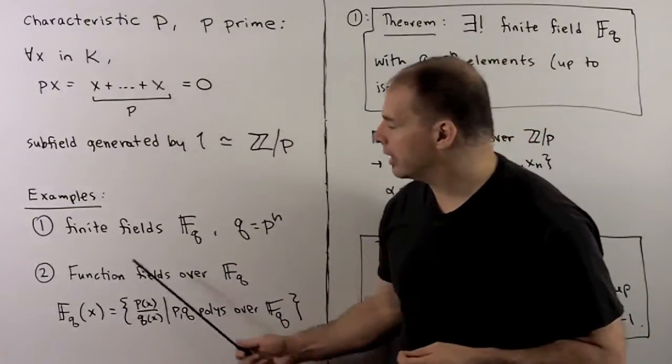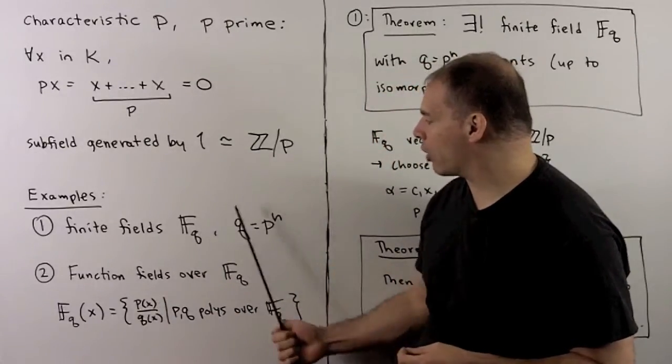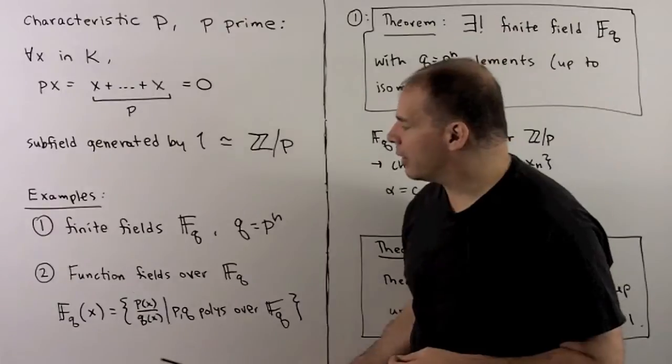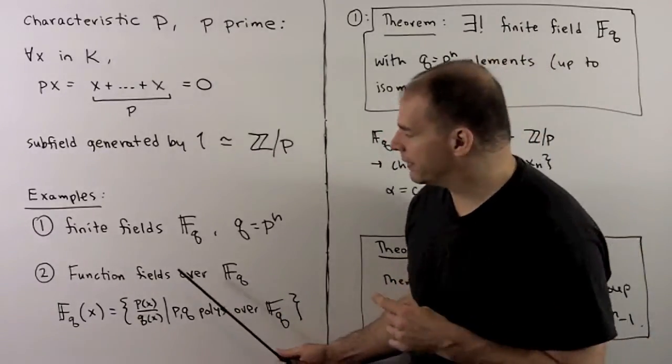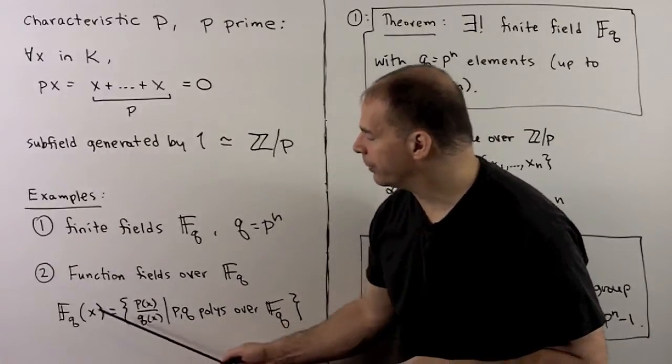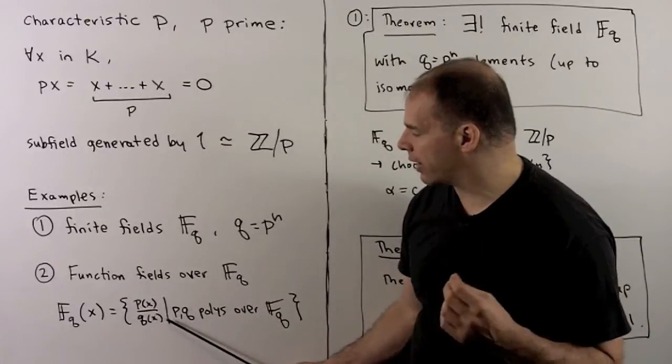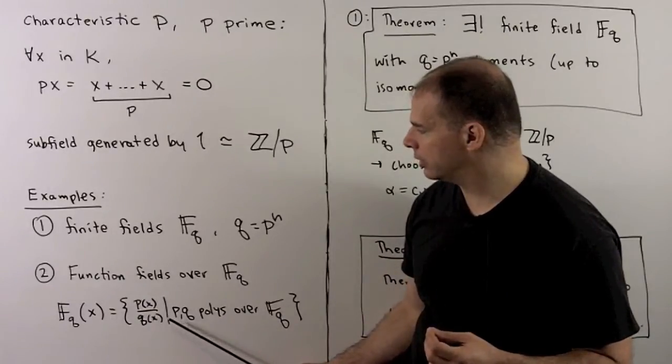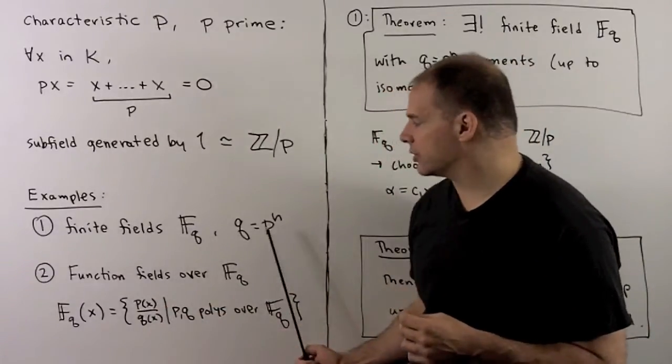For examples, we have the finite fields F_q, in this case q is a power of p. Then we'll have function fields over F_q. For instance, we have rational functions in the variable x with coefficients in F_q. So here I have polynomials in F_q over polynomials over F_q. For us, our main interest is going to be in finite fields.